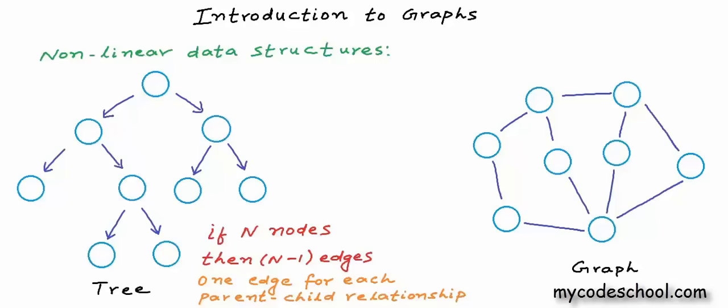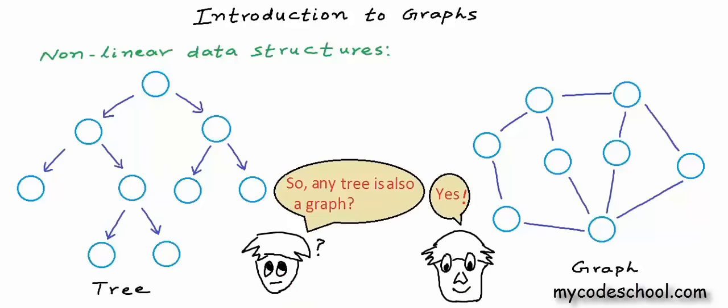In a tree with n nodes, we must have exactly n-1 edges, one edge for each parent-child relationship. All nodes in a tree except the root node would have exactly one parent, and that's why if there are n nodes there must be exactly n-1 edges. All nodes must be reachable from the root and there must be exactly one possible path from root to any node. In a graph, there are no rules dictating the connection among the nodes — a graph contains a set of nodes and a set of edges and edges can connect nodes in any possible way. Tree is only a special kind of graph.